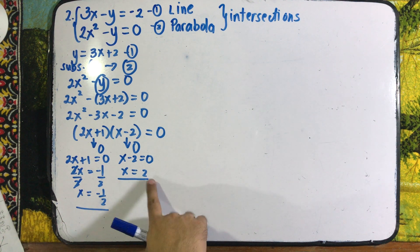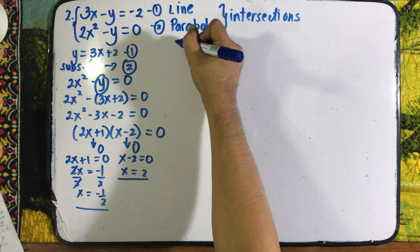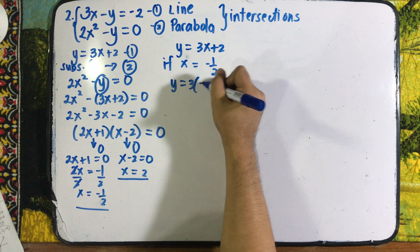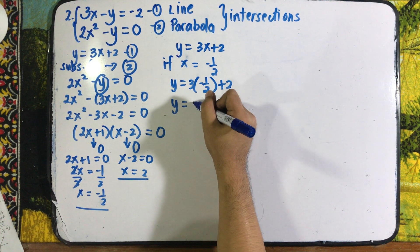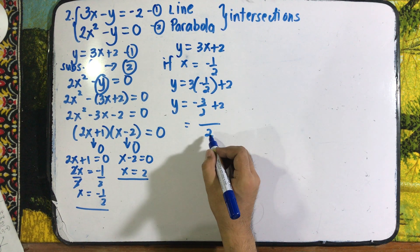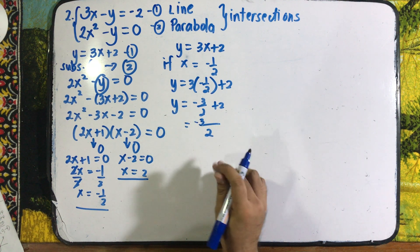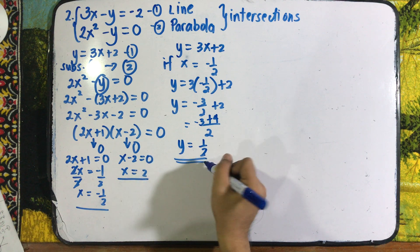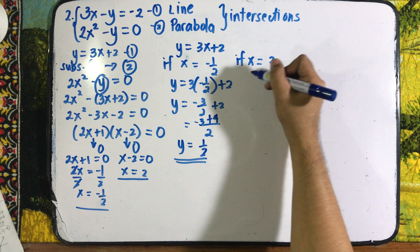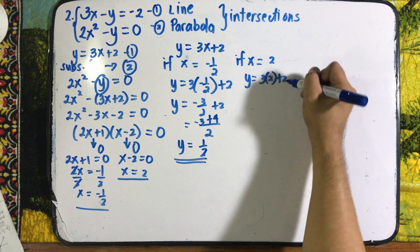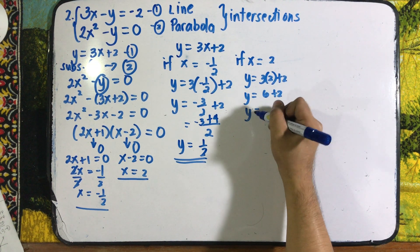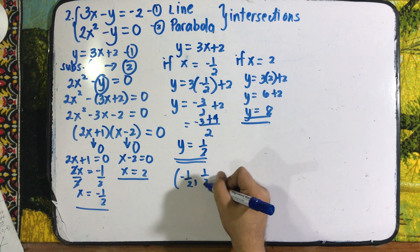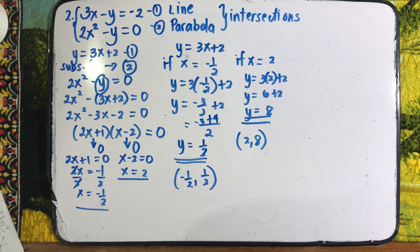We substitute back into y equals 3x plus 2. If x equals negative one-half: y equals 3 times negative one-half plus 2, which equals negative 3 over 2 plus 2. Finding the LCD of 2: that gives negative 3 plus 4 over 2, so y equals one-half. If x equals 2: y equals 3 times 2 plus 2, which is 6 plus 2, so y equals 8. Our solutions are (negative one-half, one-half) and (2, 8).